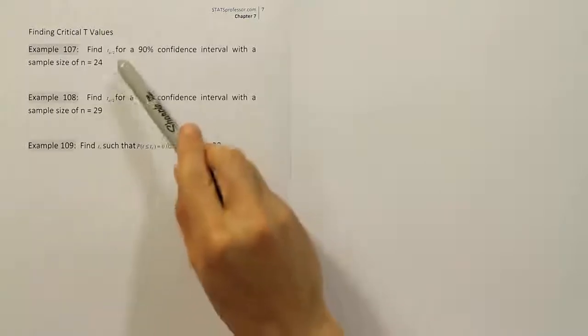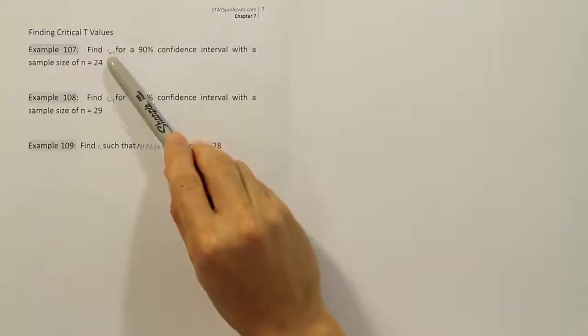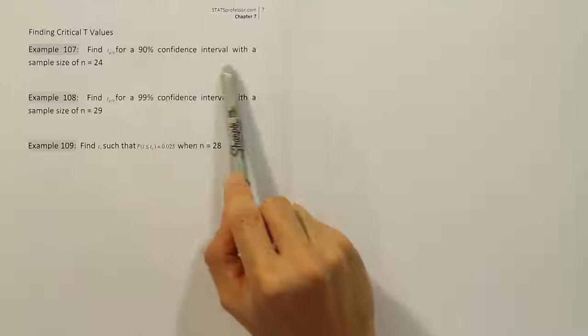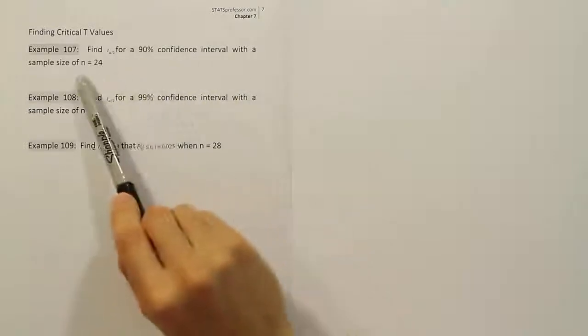In this video we're looking at how to use the t-table to find critical t values. We're looking for a t alpha divided by 2 value for a 95% confidence interval with a sample size of 24.